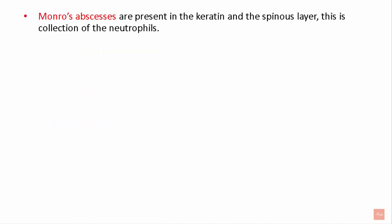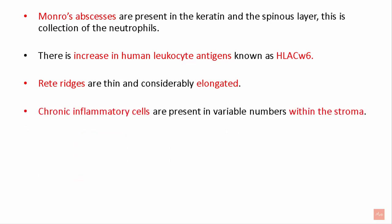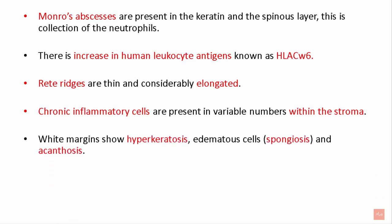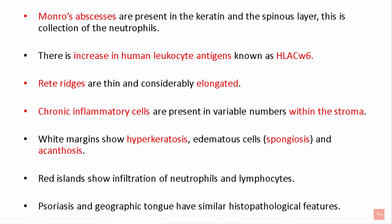Munro abscesses are present in the keratin or spinous layer — this is a collection of neutrophils. There is an increase in human leukocyte antigens known as HLA-CW6. Rete ridges are thin and considerably elongated. Chronic inflammatory cells are present in variable numbers within the stroma. White margins show hyperkeratosis, spongiosis, and acanthosis. Red islands show infiltration of neutrophils and lymphocytes. Psoriasis and geographic tongue generally have similar histopathological features.